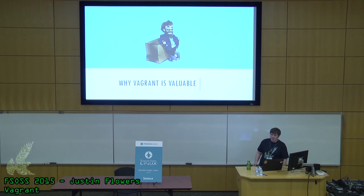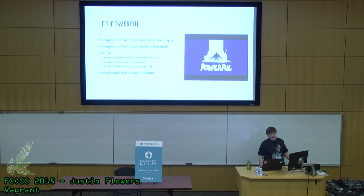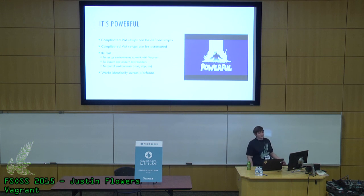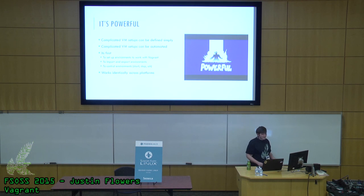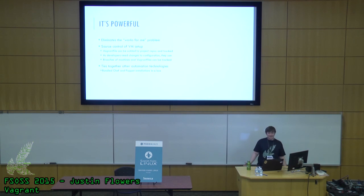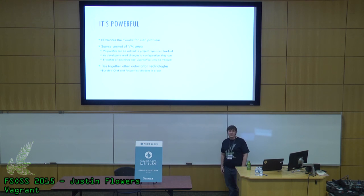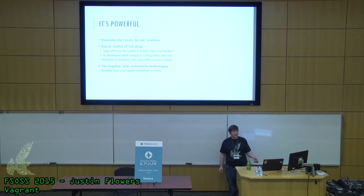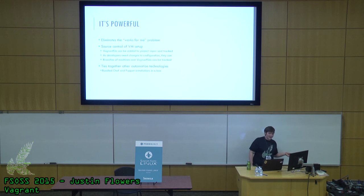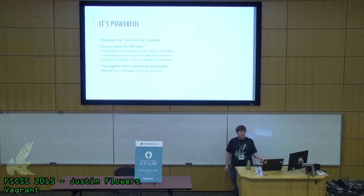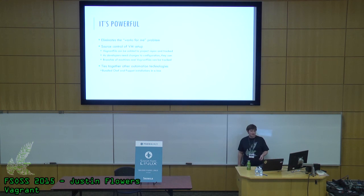Let's talk about why Vagrant is valuable. It's powerful — complicated VM setups can be defined simply and, more importantly, automated. It's really fast to set up, import, export, and control environments. And it works identically across platforms. Much like Docker, it eliminates the 'works for me' problem — if the configuration works on your machine, it must work on others'. It also provides source control of the VM setup: the Vagrantfile can be added to project repos and tracked. As the developer changes the configuration, others can keep up to date. Branches of machines and Vagrantfiles can be tracked, including provisioning. And finally, it ties together other automation technologies — you can bundle Chef and Puppet installations in a box and have them called at the beginning by Vagrant.